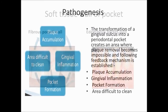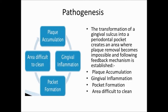Regarding pathogenesis — how do we arrive at the periodontal pocket? The transformation of the gingival sulcus into a periodontal pocket begins with plaque accumulation at the gingival margin. This plaque accumulation over time leads to gingival inflammation, which leads to a gingival pocket. If nothing is done, the bacteria in the plaque destroy the junctional epithelium and migrate apically toward the periodontal area, leading to pocket formation.